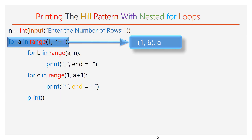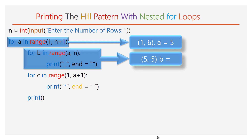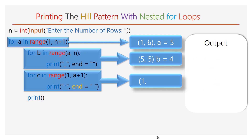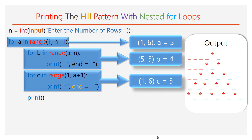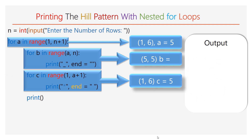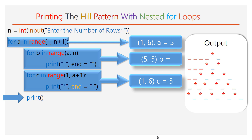Now the value of a will be 5. The first inner for loop will not be iterated. The second inner for loop has range 1 to 6, iterating 5 times. During each iteration, one star along with a space will be printed. Finally, at the end of the second inner for loop, 5 stars with spaces will be printed. The print function is executed and this is the output you are going to get.